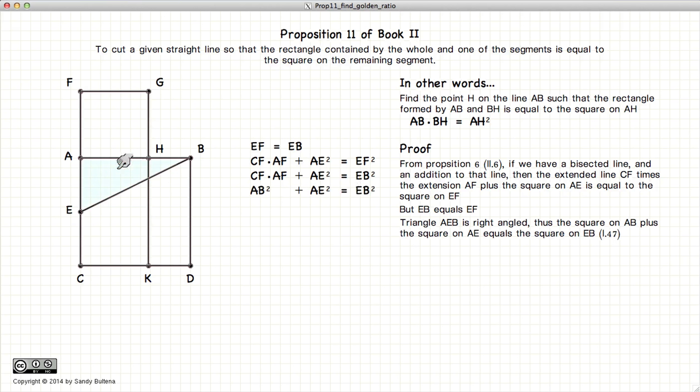Now, if we look at our triangle AEB, it's a right angle triangle, so from Pythagoras' theorem, we have AB squared plus AE squared is equal to EB squared.